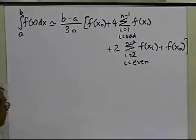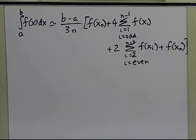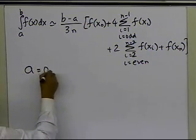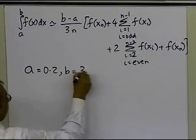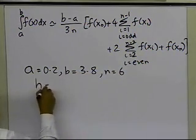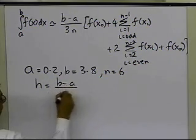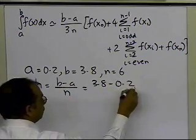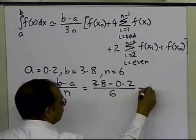That's the general formula for Simpson's one-third rule. We want to apply this to our integral going from 0.2 to 3.8. So a is 0.2, b is 3.8, and since n is 6, h is (b minus a) divided by n, which is (3.8 minus 0.2) divided by 6, giving us 0.6.